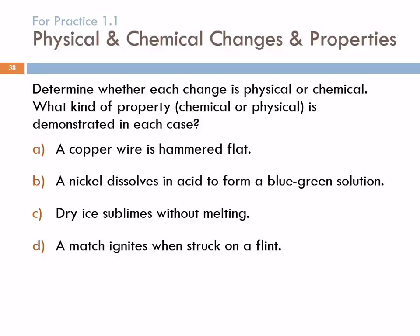Let's look at a couple of examples. Determine whether each change is chemical or physical, and what kind of property is being demonstrated. First: a copper wire being hammered flat. Physical — it's still copper; we've just changed the shape of it. What kind of property is that? It's malleability. Metals are malleable, meaning you can hammer them flat. That's a physical property — you can demonstrate it without destroying the original substance.